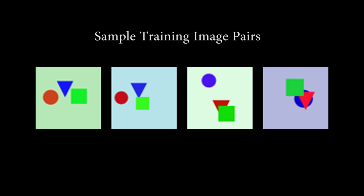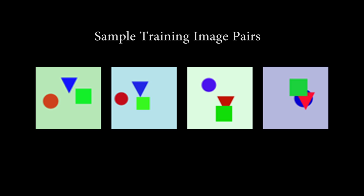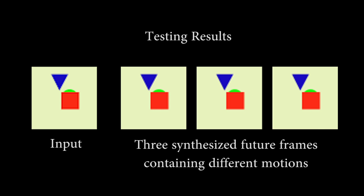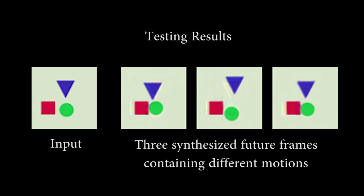We present motion prediction results on three different datasets. Here we show a sample of training data from a simple shapes dataset. Notice how squares move horizontally, circles vertically, and the triangle's motion is correlated with the circle's motion. Given a new input image, here we show the output of our network for three random samples. Notice that although the motion is different in each sample, it is consistent with the motion distributions in the training data.